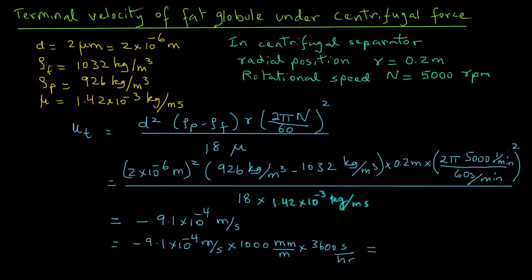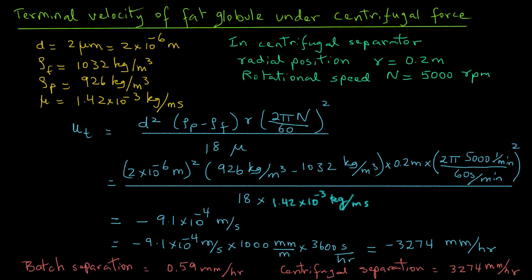So comparing the two examples, using the same data for diameter, densities, and viscosity: in the case of gravity separation, the terminal velocity is about 0.6 mm/hr, whereas in a centrifugal separator operating at 5000 RPM, the terminal velocity is 3274 mm/hr. In the centrifugal separator, the fat globule moves at a much higher velocity than with simple gravity separation. I hope that gives you an understanding of the use of the expressions developed in other tutorials for determining terminal velocity.